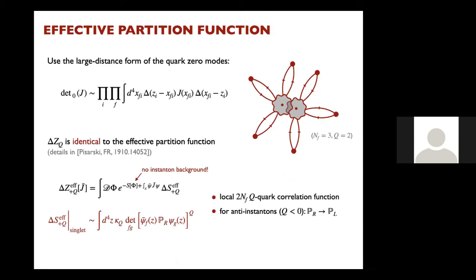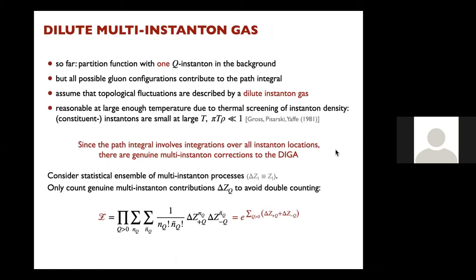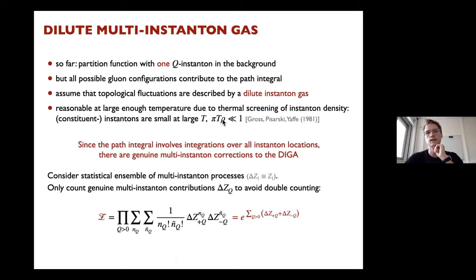So far I have considered the partition function in the background of one multi-instanton. Now I assume a dilute gas — not just of single instantons, but of multi-instantons. This is reasonable at sufficiently large temperatures due to screening: instantons are small at large temperatures, always smaller than 1/(πT). The path integral involves integrations over all locations, so there are genuine multi-instanton corrections to the dilute gas, captured by ΔZ_q.